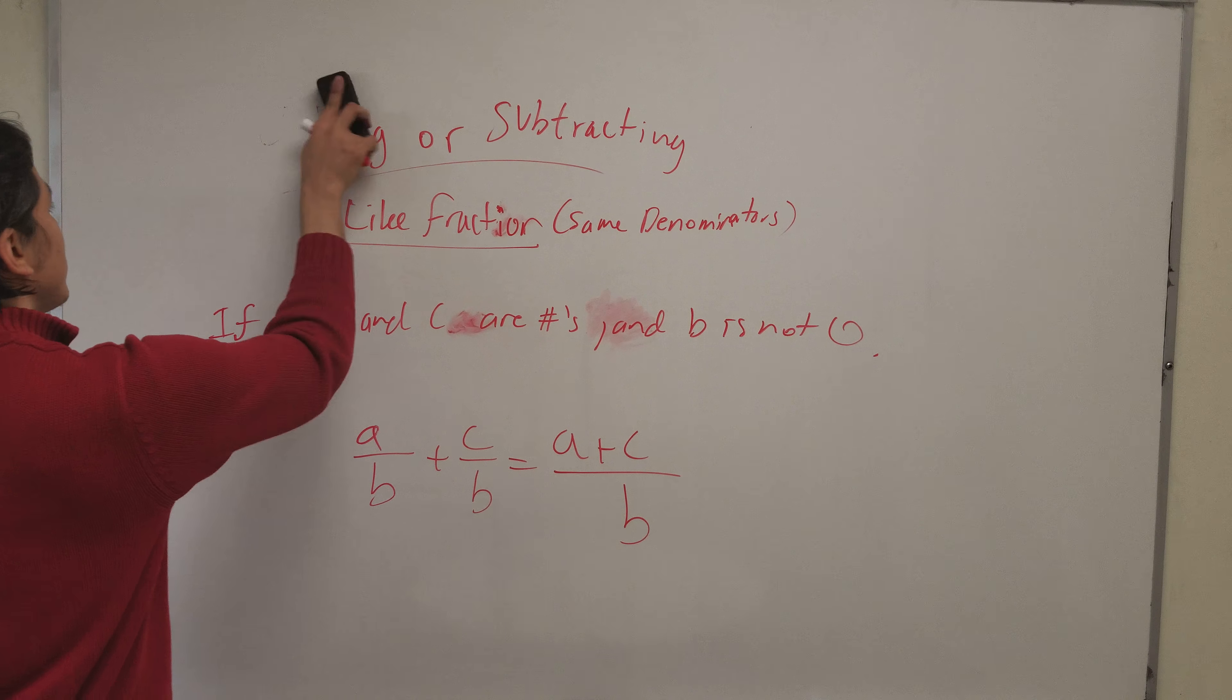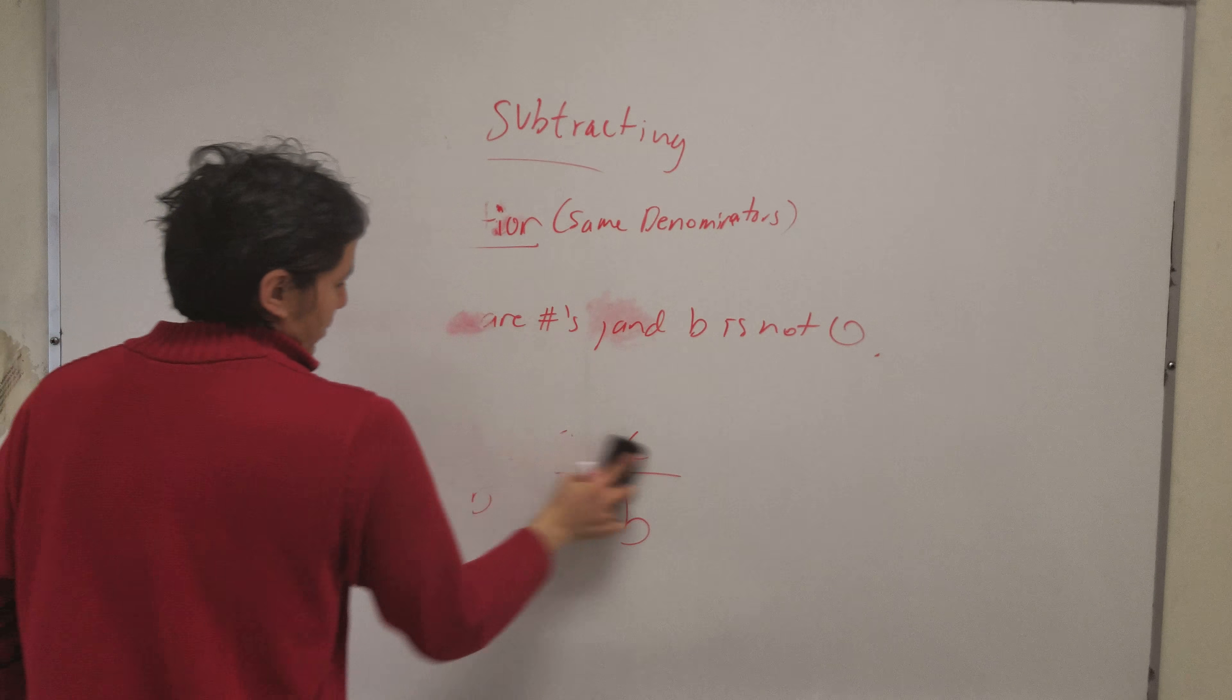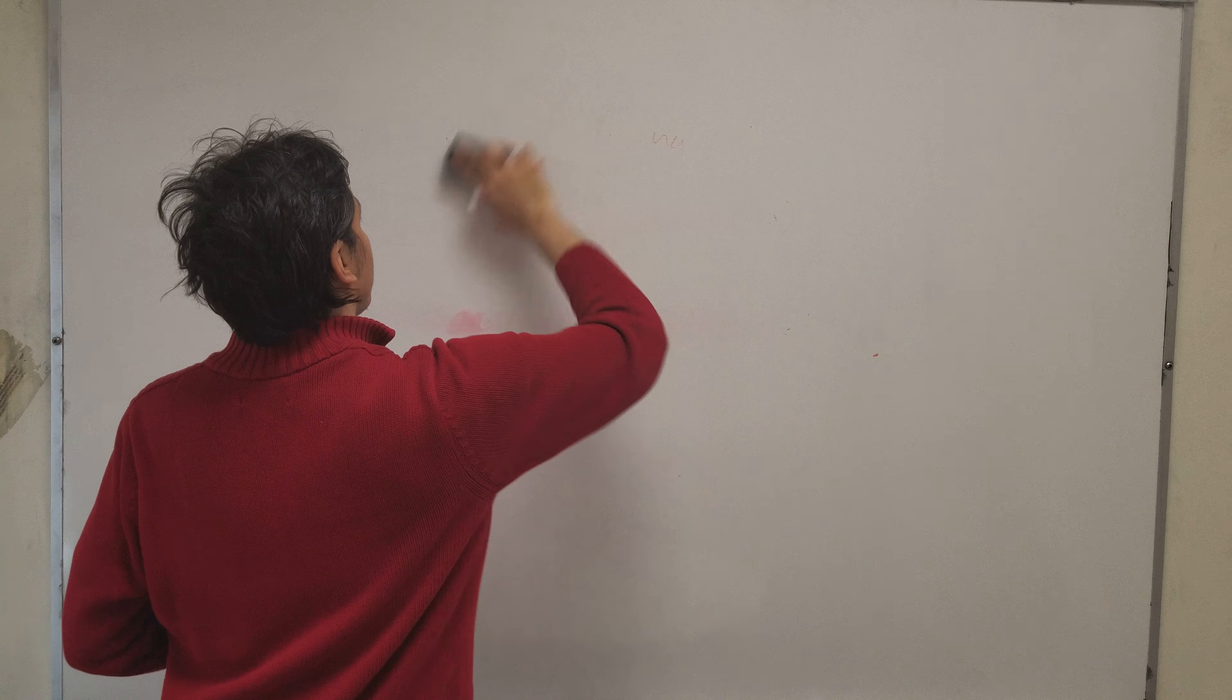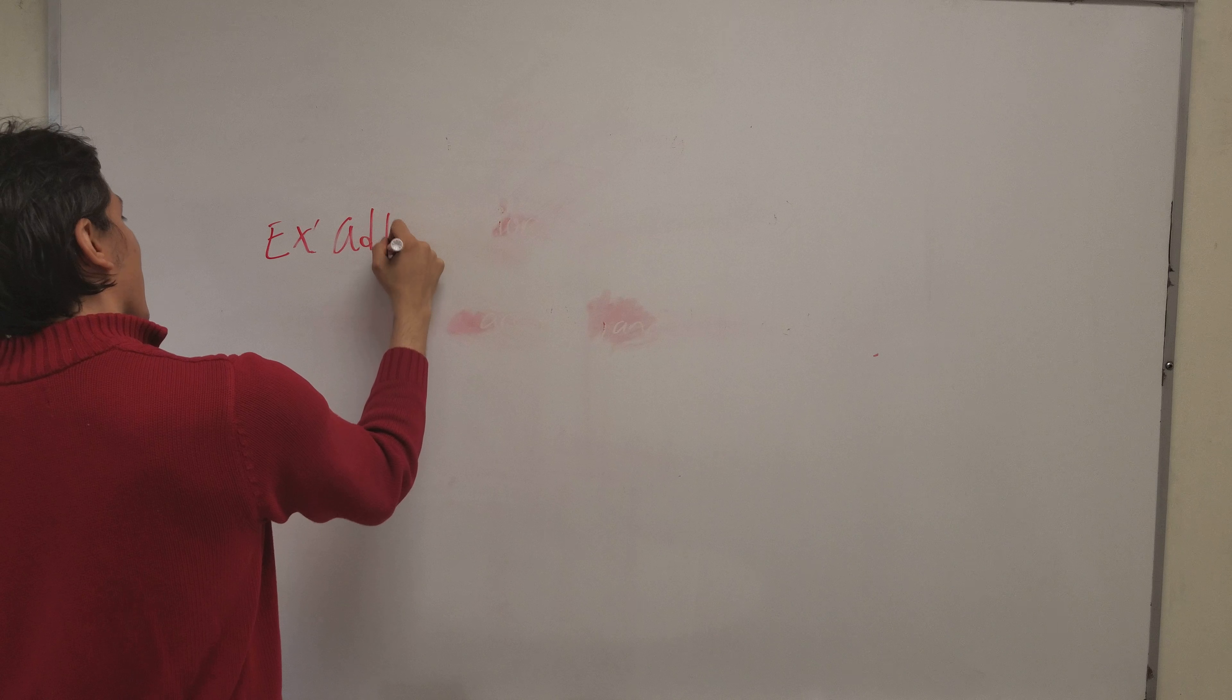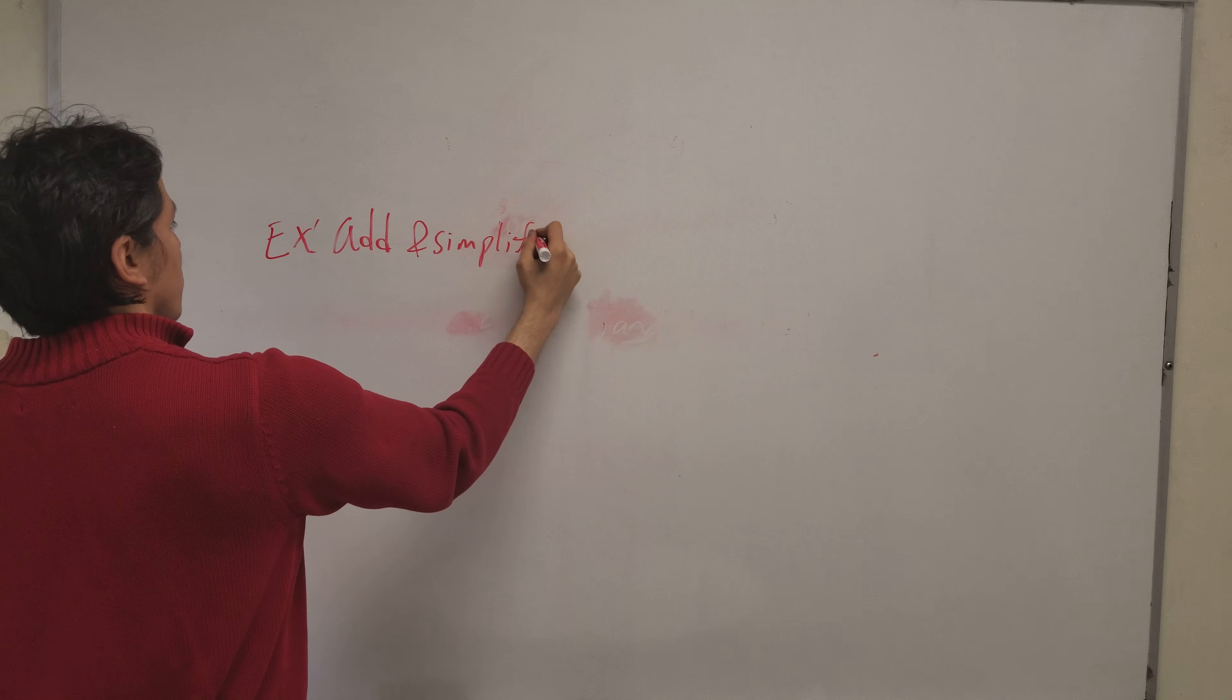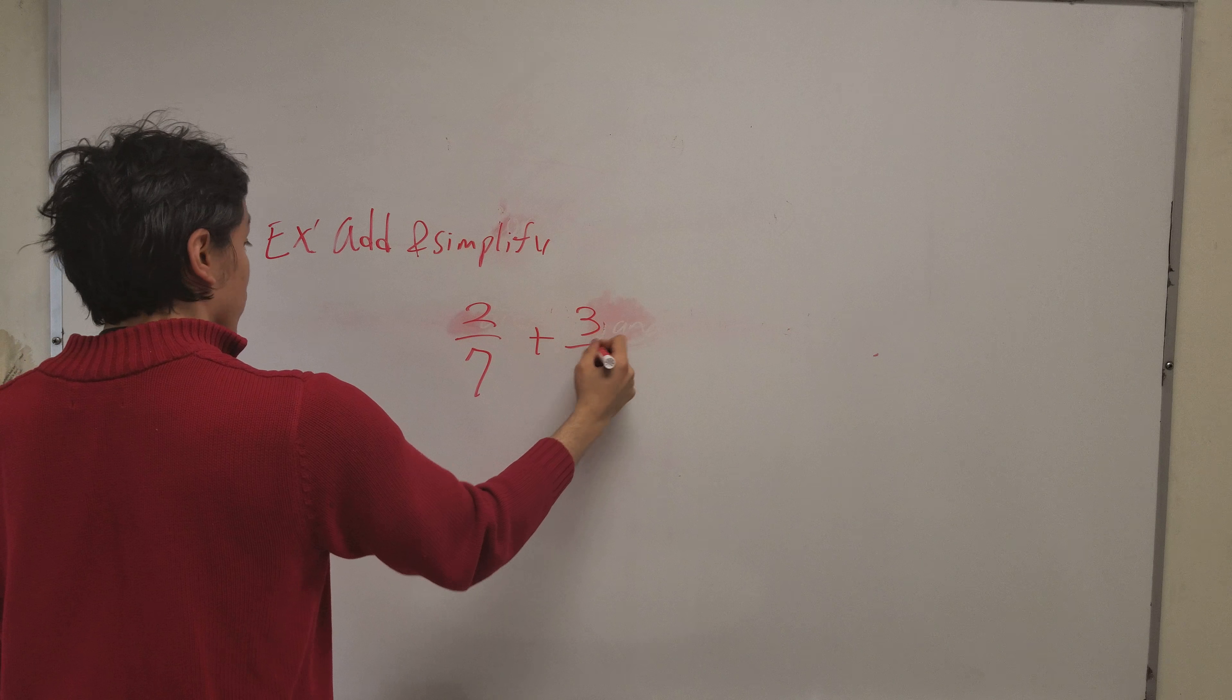So let's see what does that mean with an example. So a problem most likely would say add and simplify or just basically add would be two over seven plus three over seven, right?